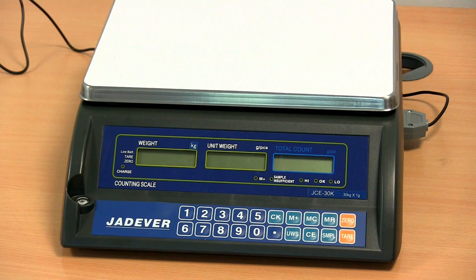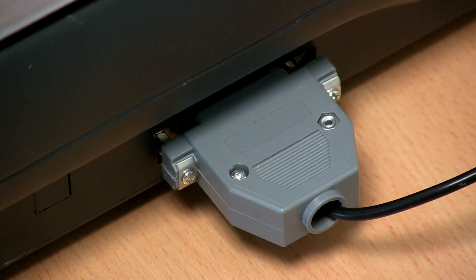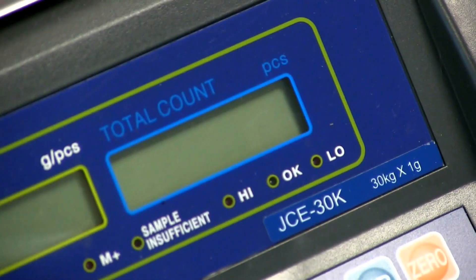The JCE is a low cost counting and check weighing scale with a rechargeable battery, optional RS232 port and a choice of graduations and capacities.